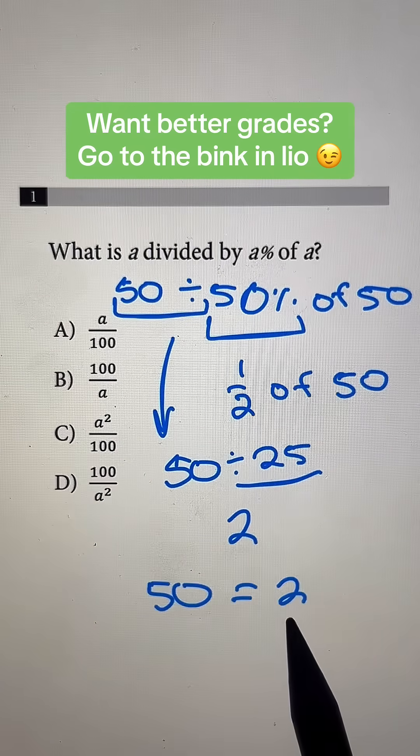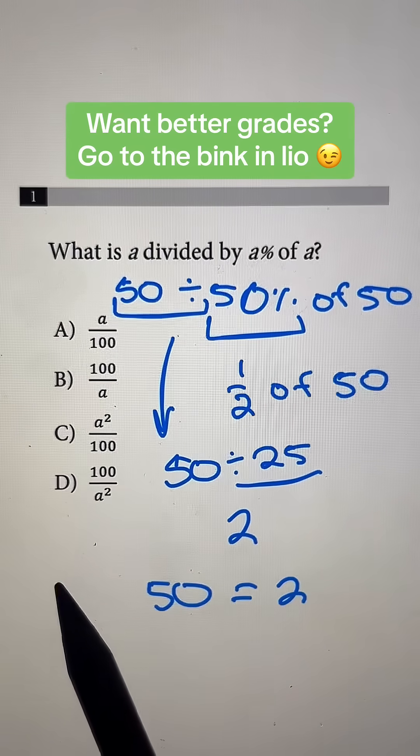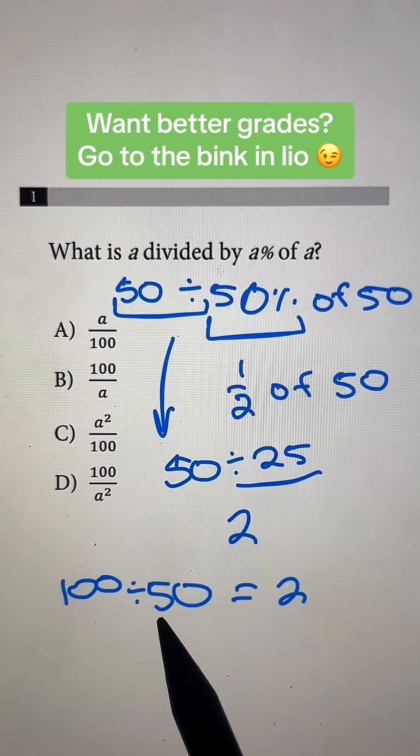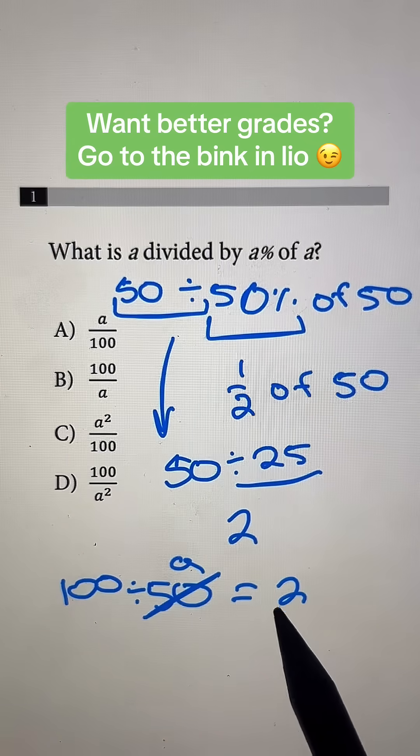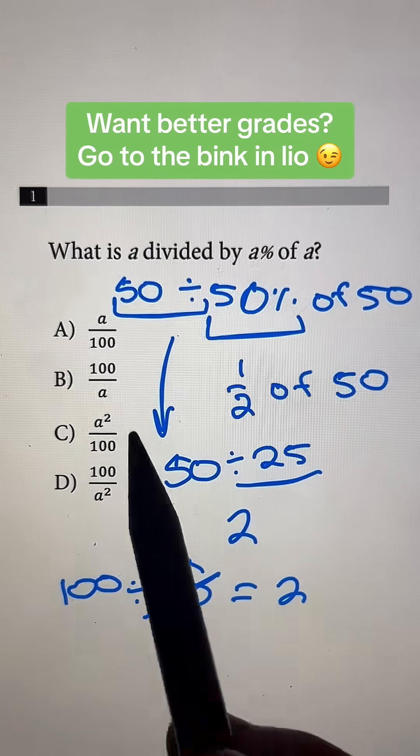Now it looks like if you do 2 times 50, that's going to give you 100. And if we do 100 divided by 50, that would give us 2. Now our A value is going to be 50. So it's really just 100 divided by A will give us 2, which is going to be the same as answer choice B.